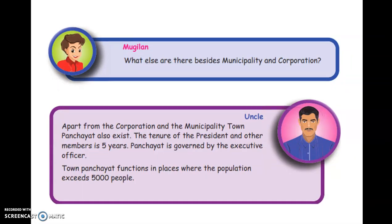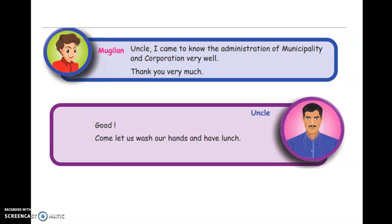Uncle, what else exists besides municipality and corporation? Mugila, apart from corporation and municipality, town panchayat also exists. The tenure of the president and other members is five years. The town panchayat is governed by an executive officer. Town panchayat functions in places where the population is above five thousand people.